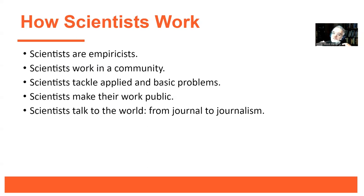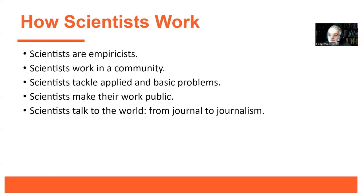In the book, scientists are described as empiricists — they look at data, at something observable. That's different from early psychology, where Wundt, Titchener, and Boring used introspection: you sit down and think about how you are thinking. The problem with subjectivity is you can't verify it — you can't argue because you're not looking at any common set of data.